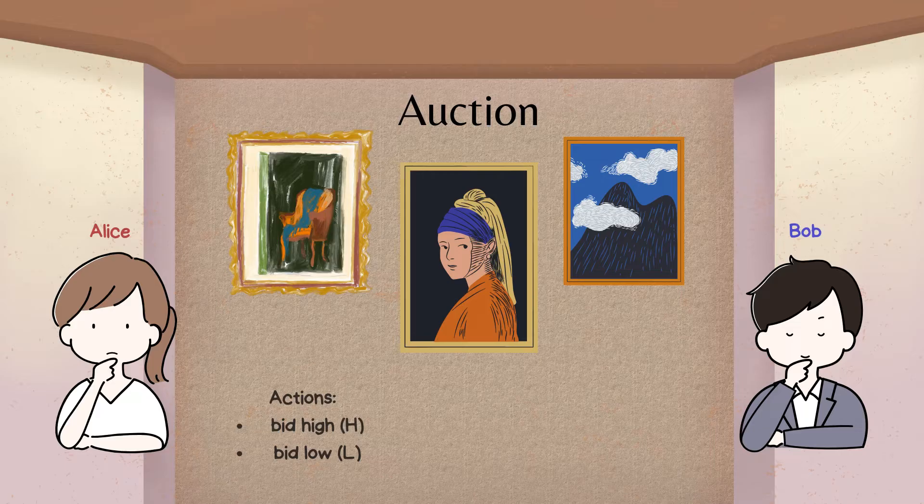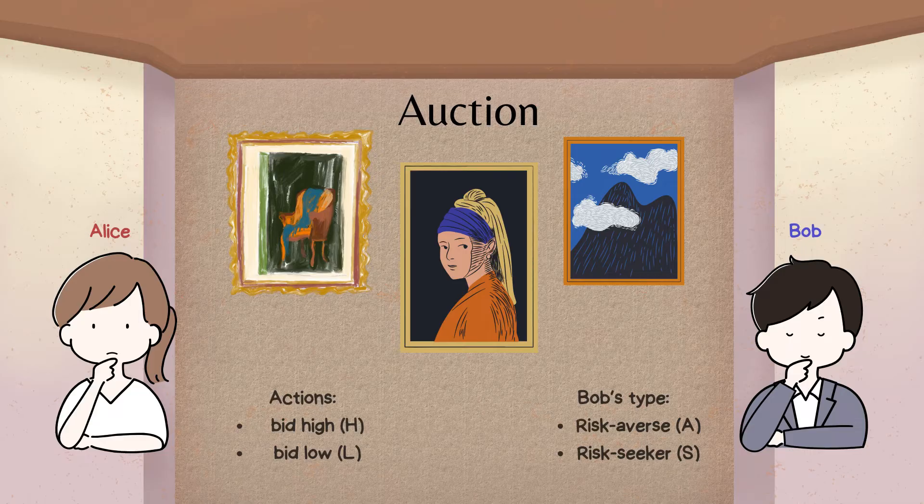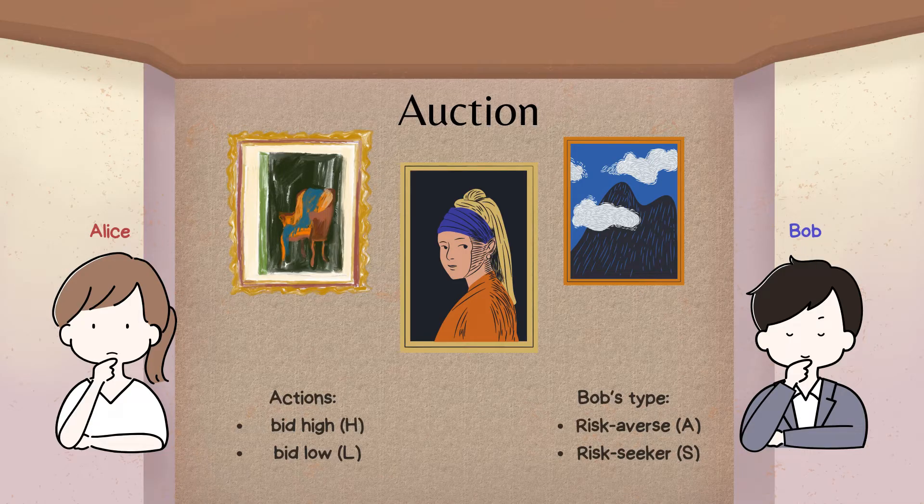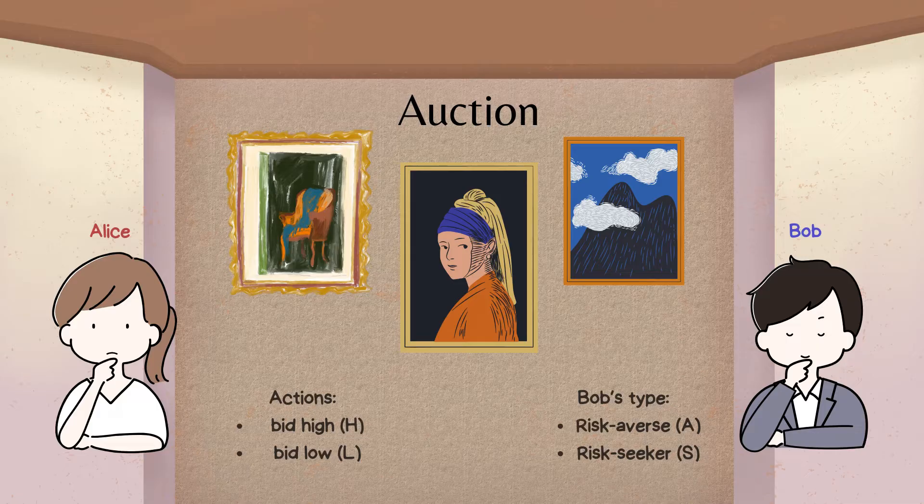Let's say that Bob's type is unknown to Alice and can either be risk-averse or A, or risk-seeker or S, whereas Alice's type is known. So there is only one side of incomplete information.